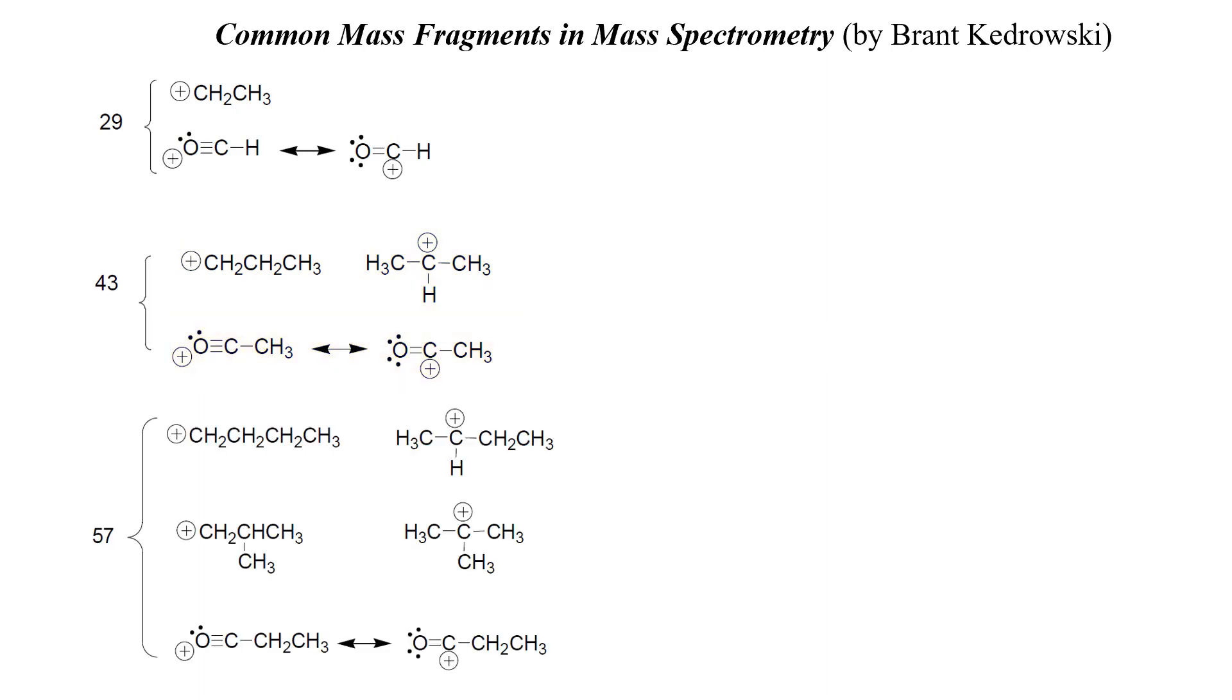Peaks at 57 can result from butyl cations, and there's four different types: a normal butyl cation, a secondary butyl cation, an isobutyl cation, or a tertiary butyl cation. It might also be this larger acylium ion. These all weigh 57, and if you see a peak at 57 it could be any one of these species. Peaks at 77 typically are phenyl cations, a peak at 91 is oftentimes a benzyl cation, and a peak at 105 is typically this benzylium cation.